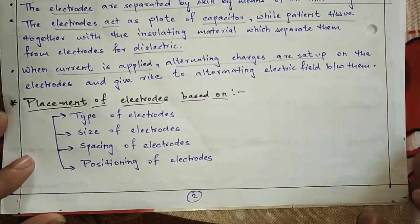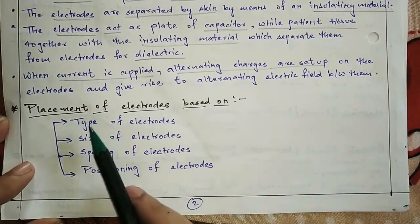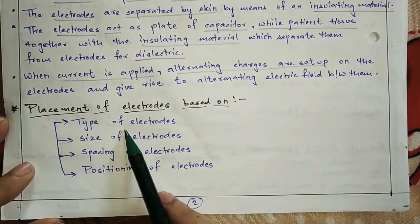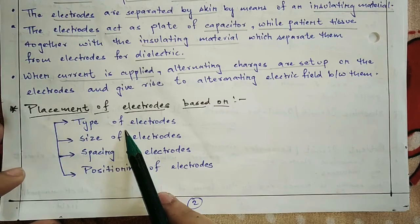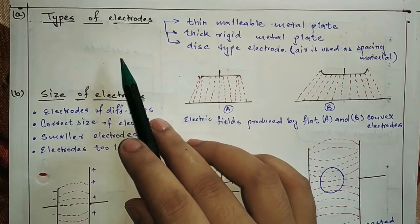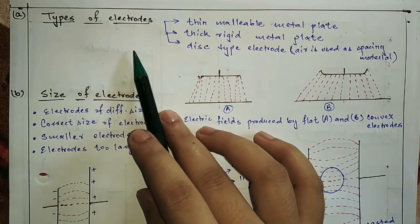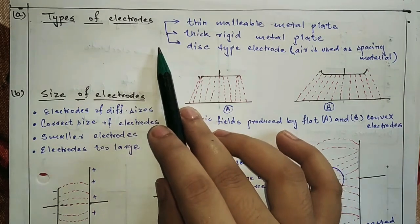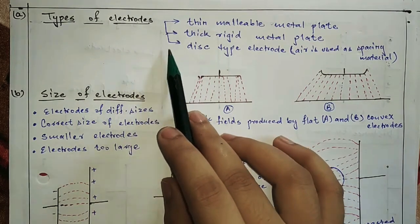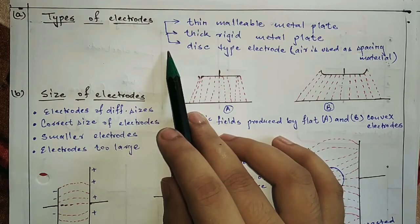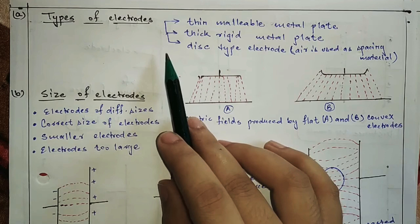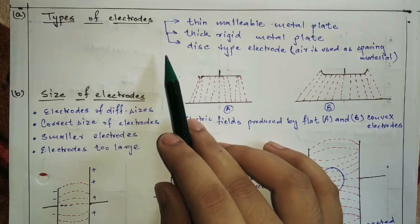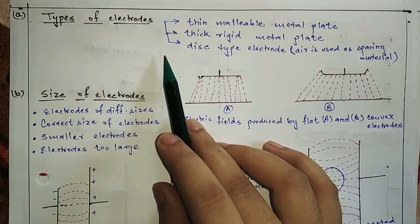Now let's talk about the placement of electrodes and types of electrodes. Electrodes come in various forms: pad electrode, plate electrode, and disc electrode. Whatever electrode is used, inside it is a metal plate, and the metal plate is covered with insulating material.